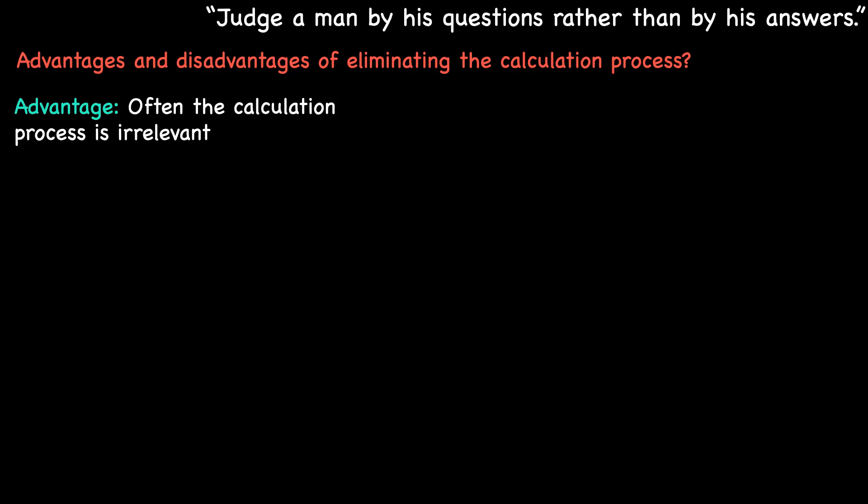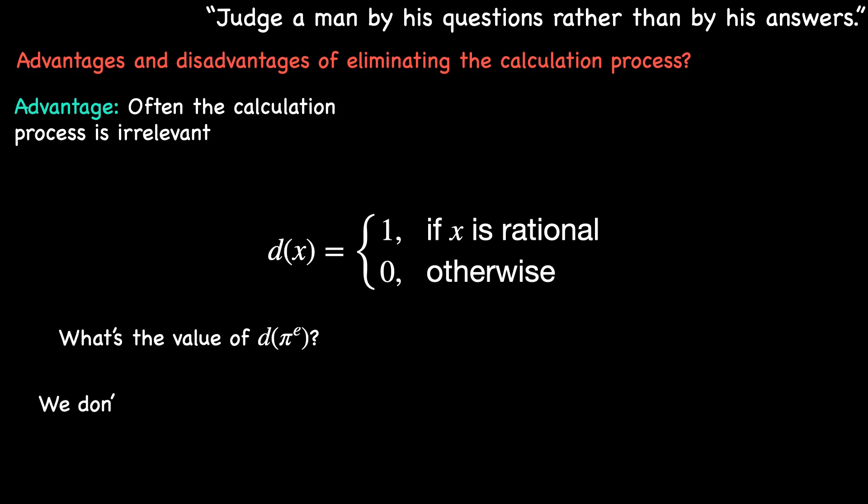Consider the Dirichlet function, d(x), which is defined as 1 when x is rational and 0 when x is irrational. Calculating d(x) might seem straightforward, but try determining its value for x equal to pi to the power of e. However, despite the complexity of such calculations, we don't need to compute the function to know that it is discontinuous everywhere.